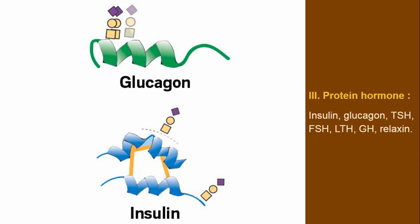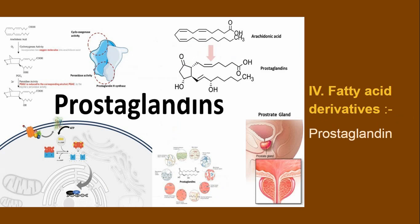The third chemical nature of hormones is protein hormones — these are protein in nature. Examples include insulin, glucagon, TSH, FSH, LH, GH, and relaxin. All these are protein-type hormones.